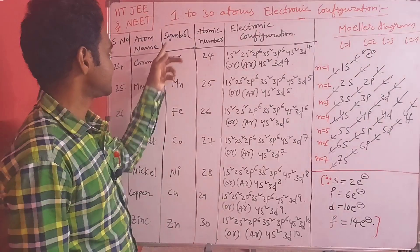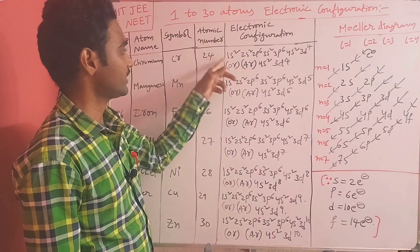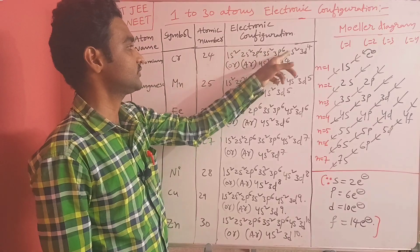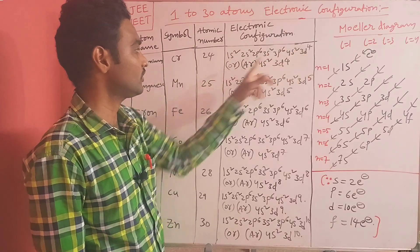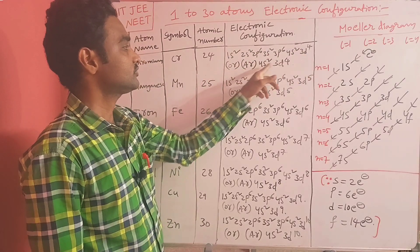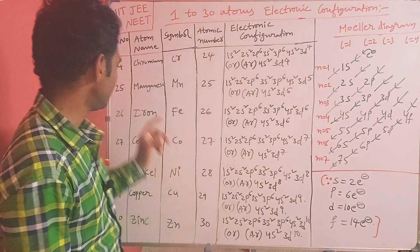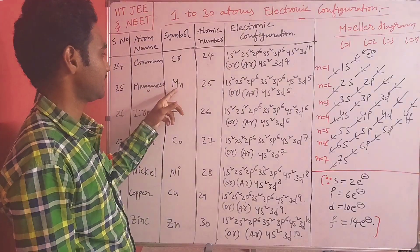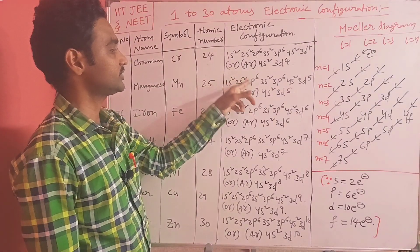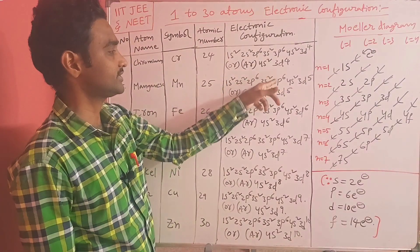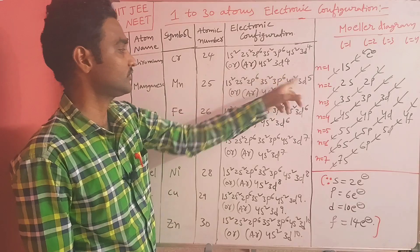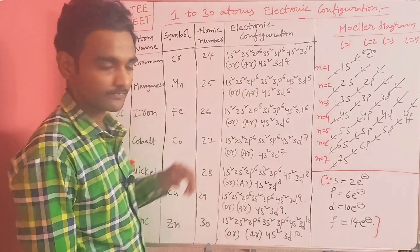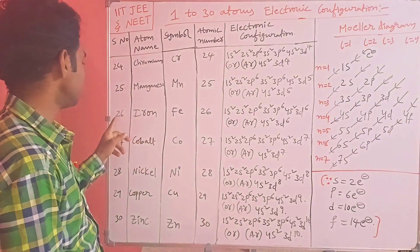Chromium (Cr), atomic number 24: 1s2 2s2 2p6 3s2 3p6 4s2 3d4, overall [Ar] 4s2 3d4. Manganese (Mn), atomic number 25: 1s2 2s2 2p6 3s2 3p6 4s2 3d5, overall [Ar] 4s2 3d5.